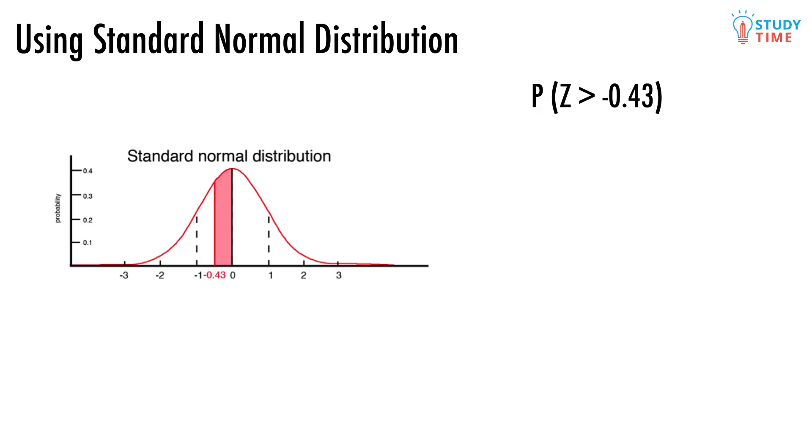OK, great. On the table, the answer to this area, which is the probability that Z is between 0 and 0.43, is 0.1664. So to find the overall answer to this problem, all we've got to do is add that 0.5 from earlier to the 0.1664 we just found, giving us an answer of 0.6664.